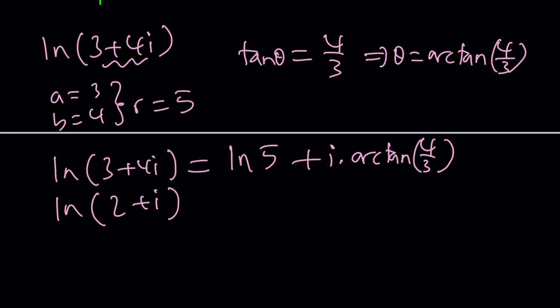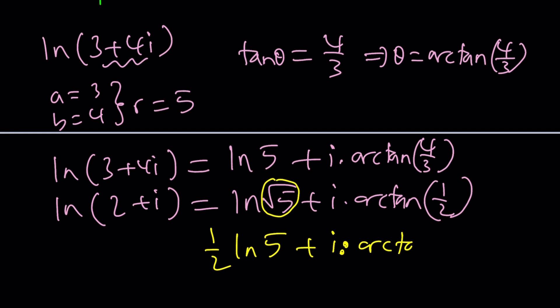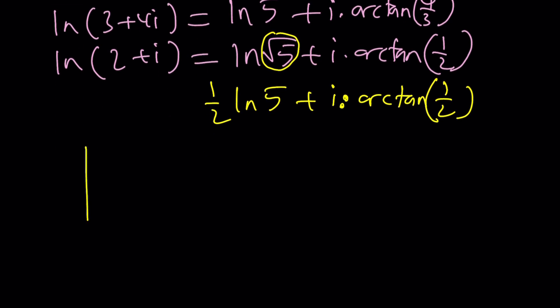Similarly, for 2 plus i, we're going to get ln square root of 5 plus i times arctan 1 half. So here's the million dollar question. How are these related? That's what I need to find. But one thing that is really helpful is that I noticed that this is the square root of 5, so I can kind of write it as 1 half ln 5 plus i times arctan 1 half. So there needs to be a relationship between arctan 1 half and arctan 4 thirds. So here's what we're thinking about. There's an angle whose tangent is 1 half, and of course the hypotenuse is going to be square root of 5, which is the modulus. I'm going to call this alpha. So this is alpha.